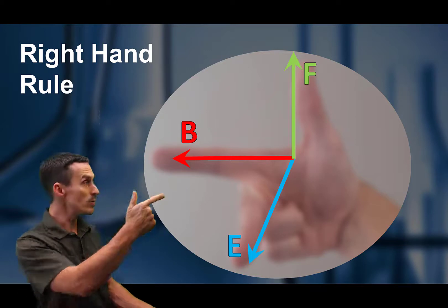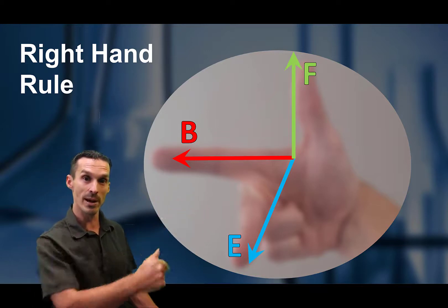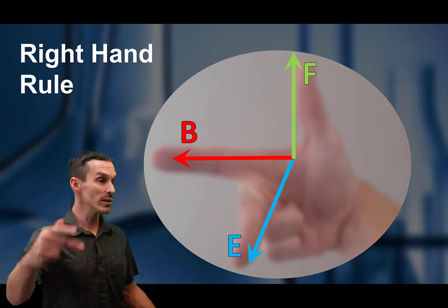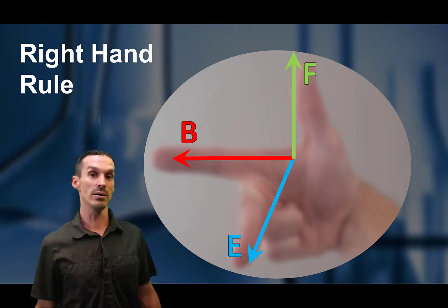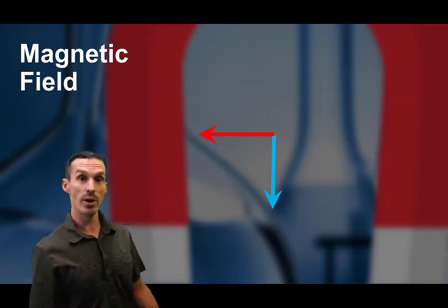Okay, so your finger's pointing out with the direction of the magnetic field. The electric field is pointing downwards, and then the force is in this sort of pointing out direction. So let's apply it to the system that we have right here.